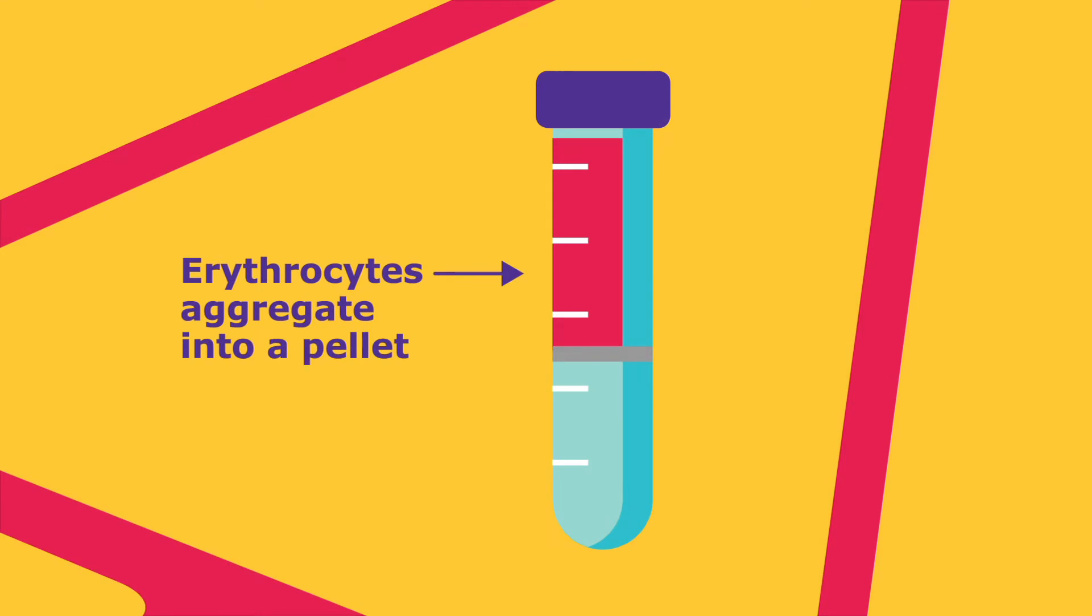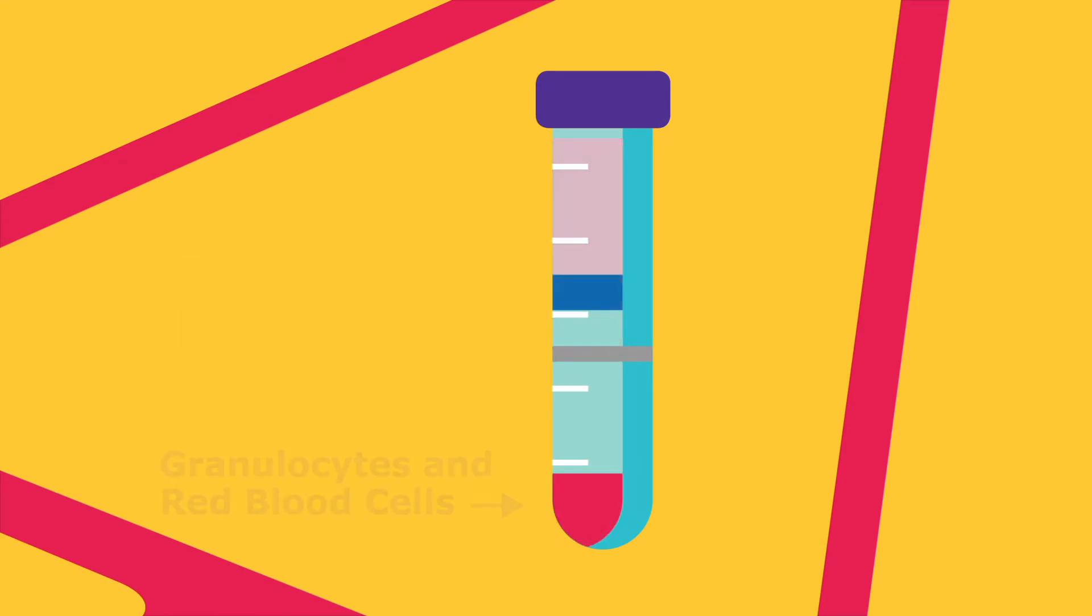The erythrocytes quickly aggregate into a pellet, and granulocytes, becoming slightly hypertonic, increase their sedimentation rate, resulting in pelleting at the bottom of the AccuSpin tube.